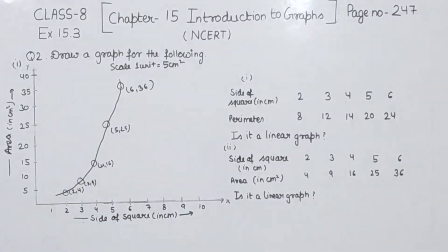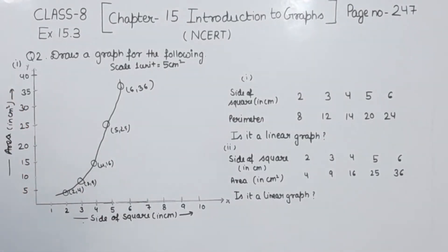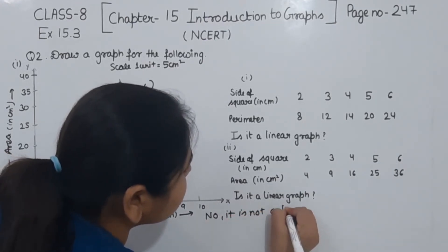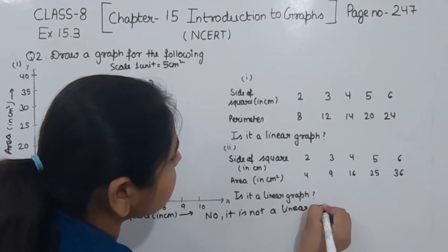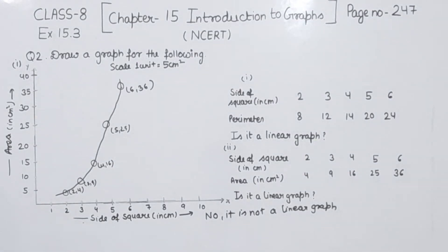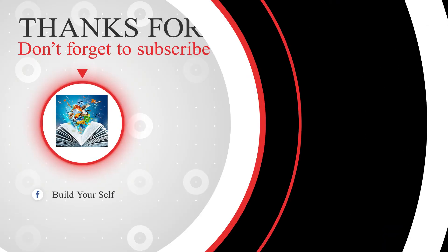This one is in curve form. We have asked whether it is a linear graph — we will say no, it is not a linear graph. This is not showing a straight line; the points are not in a straight line. That's why we have written: no, it is not a linear graph. This is the graph for part 2. With this we have completed question number 2 and exercise 15.3, chapter number 15. In the next video we are going to start with the new chapter — chapter number 16, Playing with Numbers. Thank you.